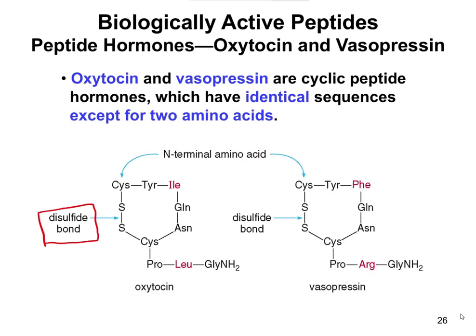Disulfide bonds occur between cysteines. The N-terminal amino acid is the cysteine in the upper left-hand corner. You read the sequence as: cysteine, tyrosine, isoleucine (ILE), glutamine, asparagine, cysteine, proline, leucine, and then another glycine at the end. The ring forms between these two cysteines through a disulfide bond, which is a covalent linkage between the two.